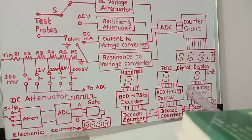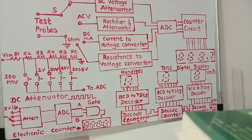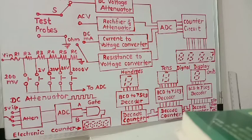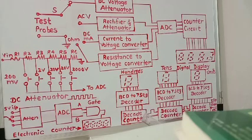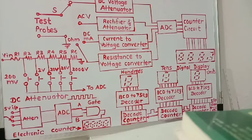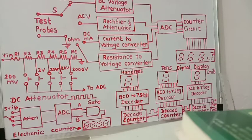For resistance to voltage measurement, the unknown resistance is connected in an op-amp circuit through which a constant current is passed. This constant current is passed through the unknown resistance, producing a voltage drop across it, and this voltage drop is then measured by the usual digital method.